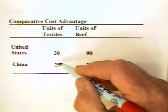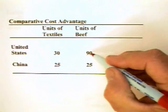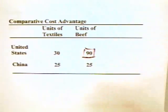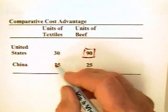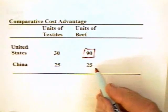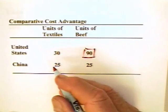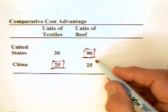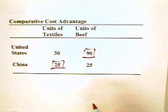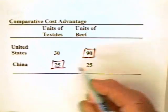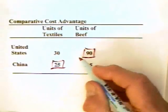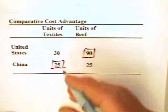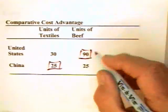The United States is basically 20% more productive in terms of textiles, but it's almost three to four times as productive in beef, so the United States has a comparative advantage in beef production. China, on the other hand, is less productive in both absolutely speaking, but it has a comparative advantage in textiles. China is 5/6 as productive in textiles and something like 5/18 as productive in beef. If these two countries produce the goods accordingly — the United States produces beef and China produces textiles — trade can be mutually beneficial.